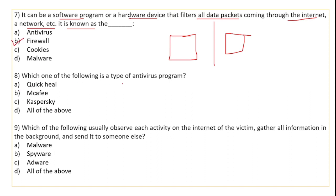Which of the following is a type of antivirus program? The options include Norton, McAfee, and Kaspersky. All of these are antivirus programs, so the correct answer is all of the above.